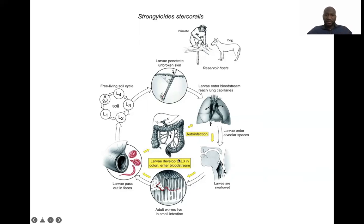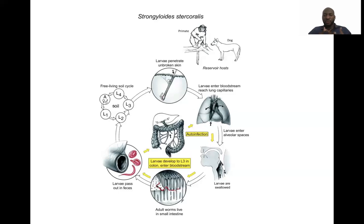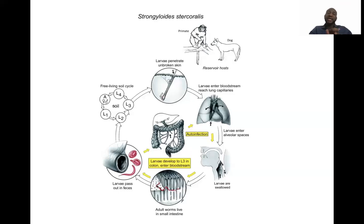A typical feature of this parasite is auto-infection — where larvae can develop to L3 and enter the bloodstream. As they enter the bloodstream, the cycle continues: the L3 goes back to the lungs and the cycle repeats. The larva keeps continuing this rotation, becoming like a free-living organism inside your body, feeding on bacteria when it returns to the intestine. This auto-infection can persist over years, and importantly, it can disseminate bacteria to other places because it carries bacteria as it travels.